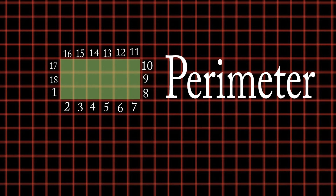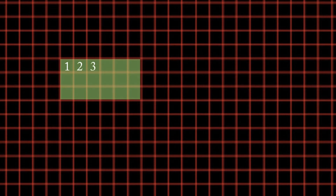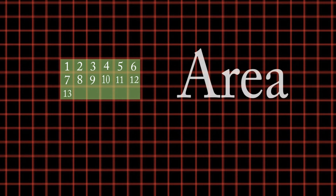Now let's check out its area. It's got 1, 2, 3, 4, 5, 6, 7, 8, 9, 10, 11, 12, 13, 14, 15, 16, 17, and 18 square units. So the area of this rectangle is 18 square units.